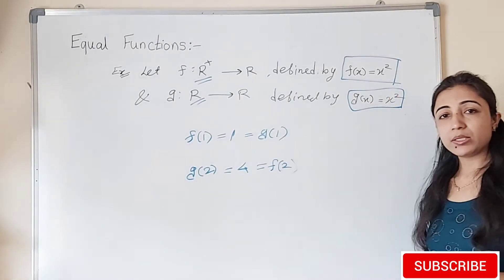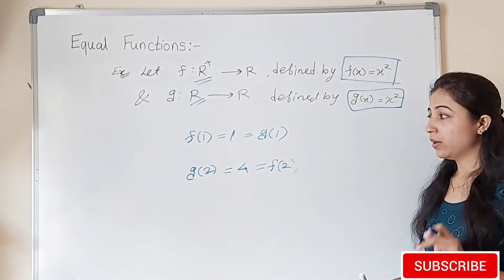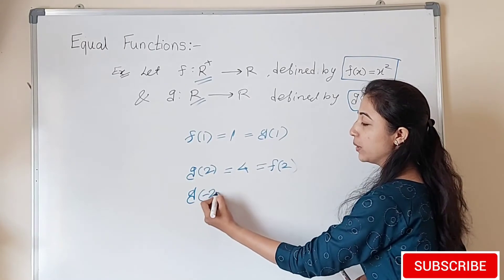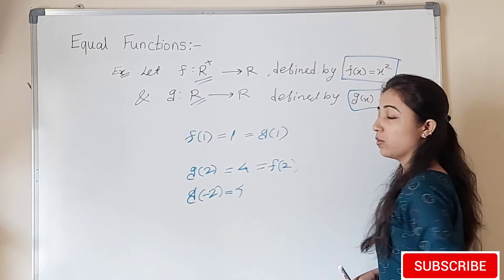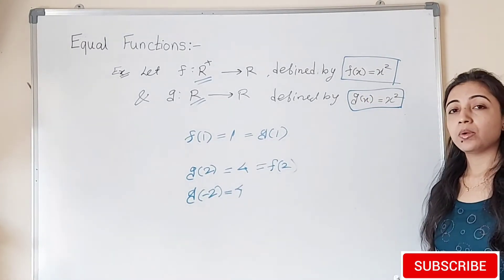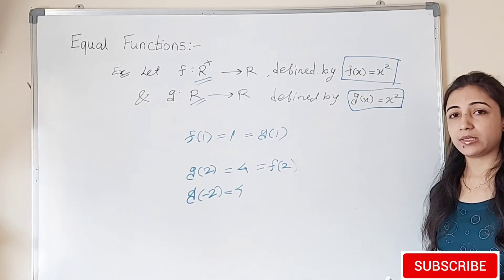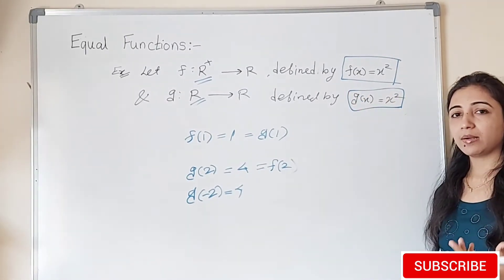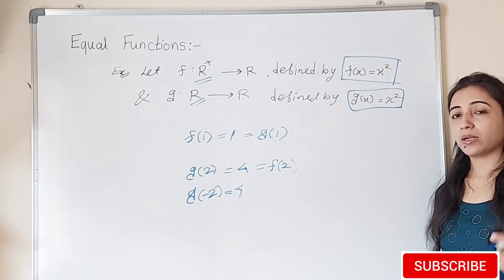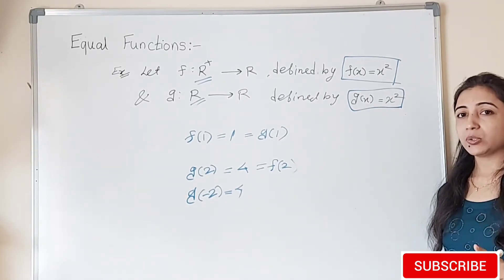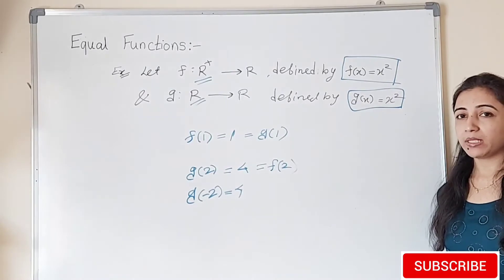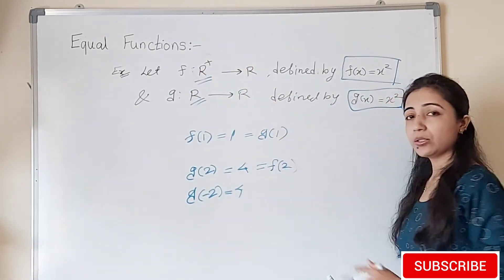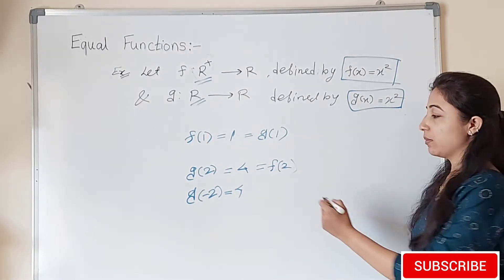But if we are taking minus 2, so here g(-2) equals 4. But what about f(-2)? f(-2) does not exist because the function is only defined on positive real numbers, not for negative points.